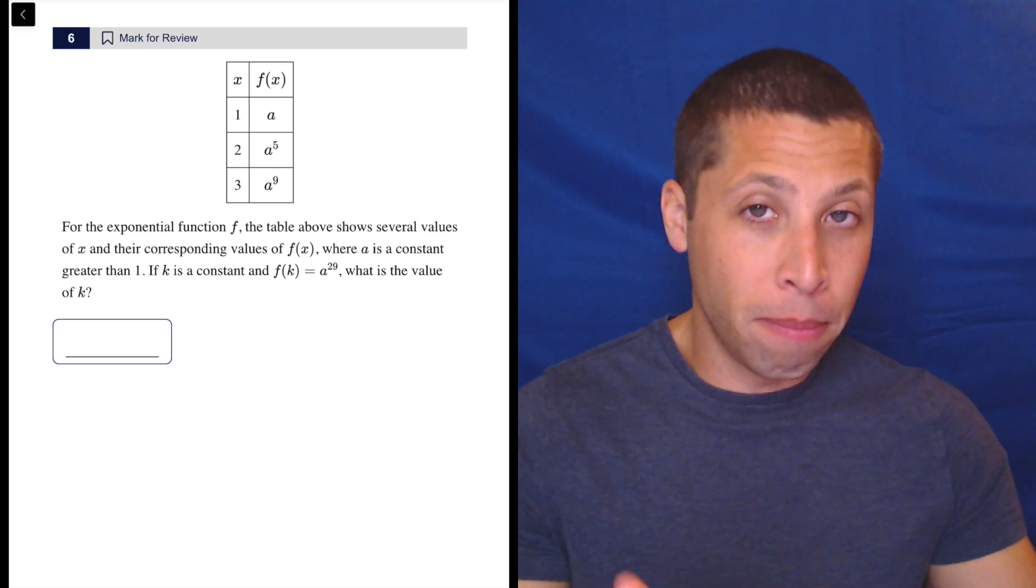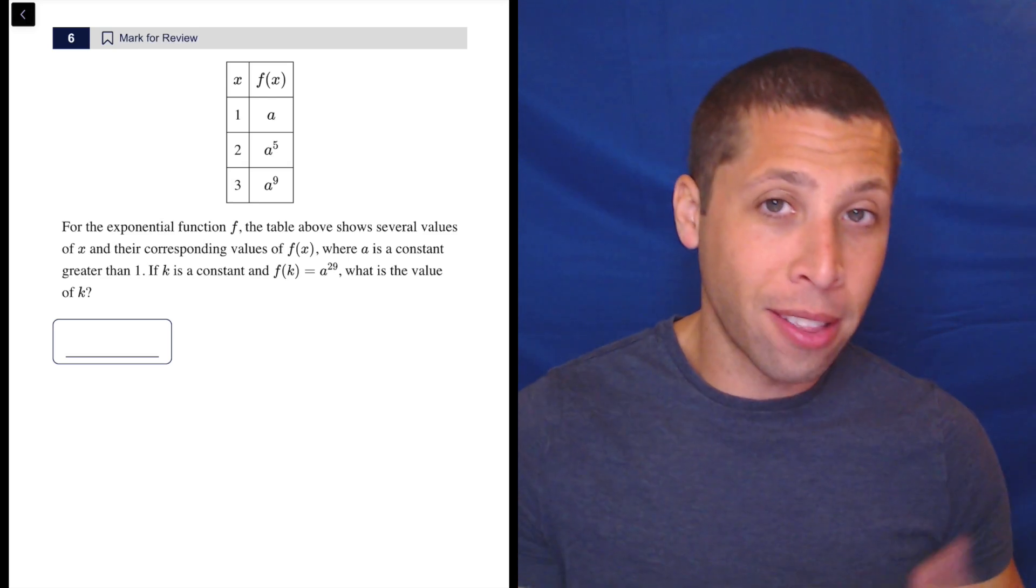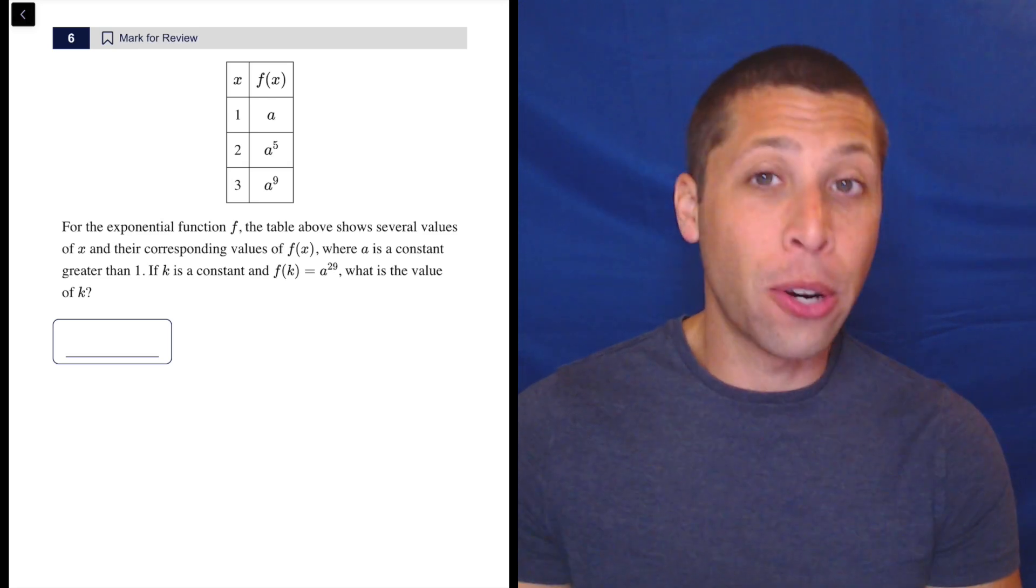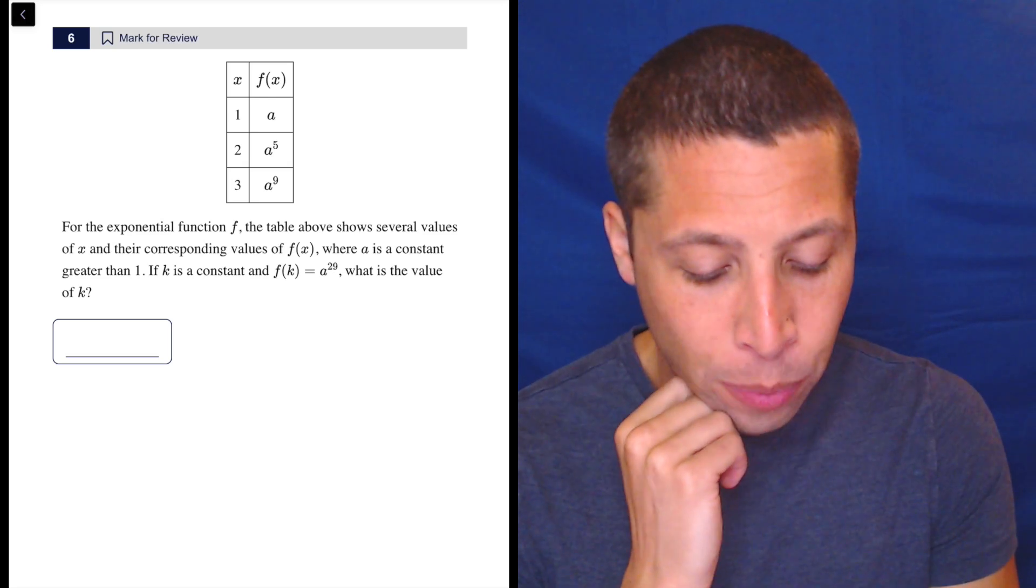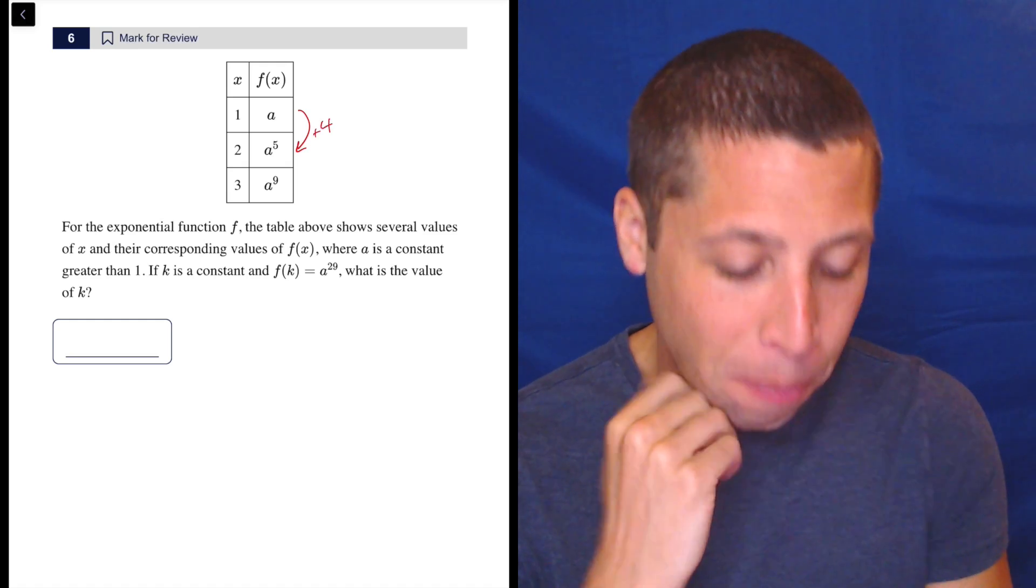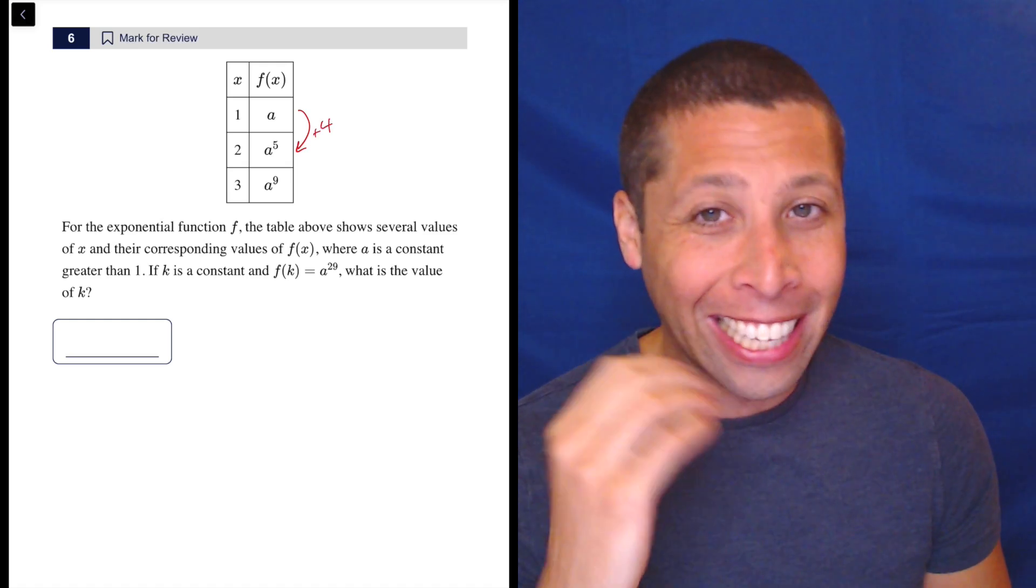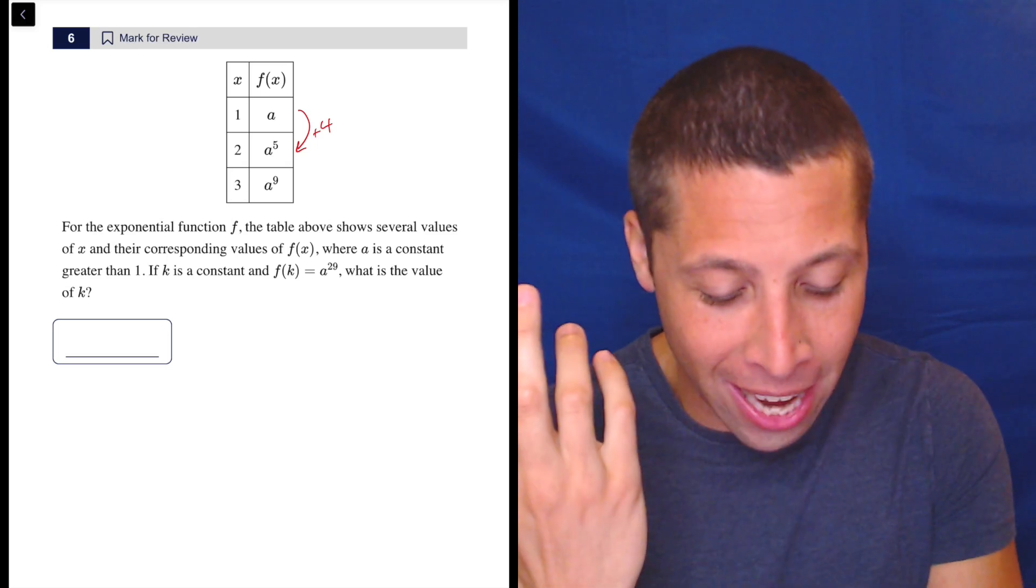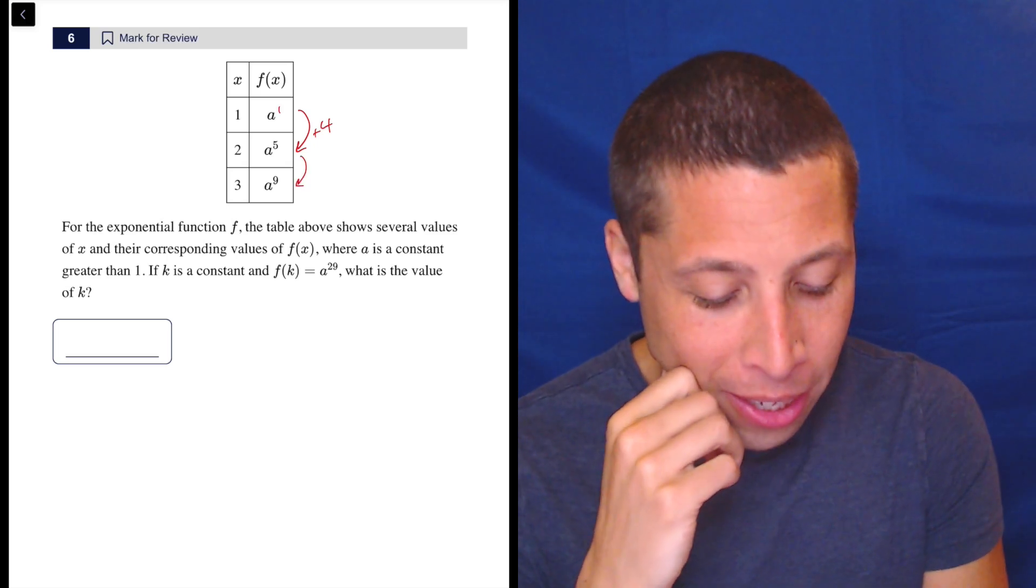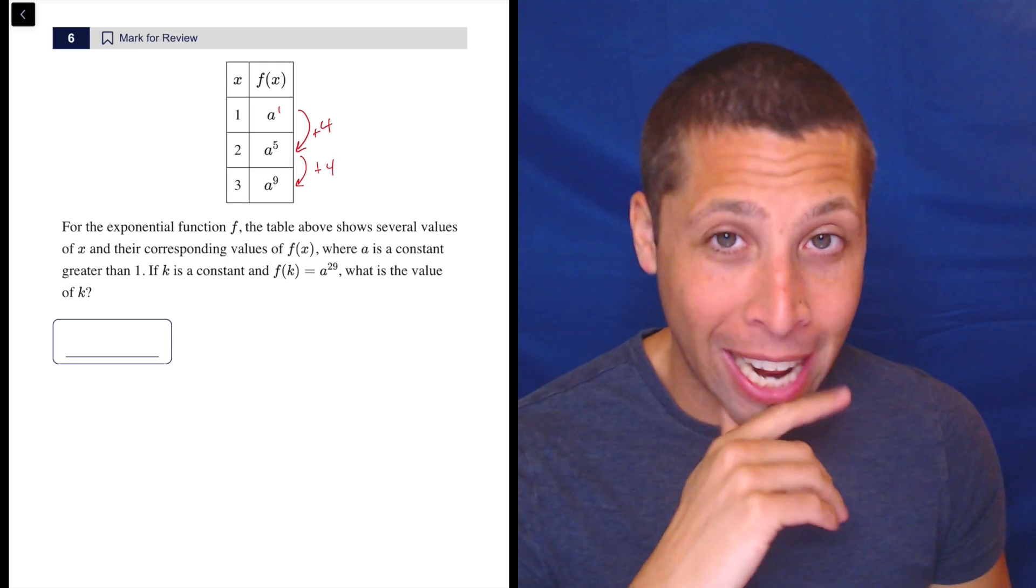So we got to build on this where we have a and then a to the 5th and a to the 9th. So we're trying to think what's going to happen. We could build the equation or we can recognize how did we get from here to here? It's not plus 4 because it's not like a linear thing, but it's plus 4 to the exponent. This is a to the 1st, so then 4 more gets us 5. And then what do you know? If we did 4 again, we get a to the 9th.